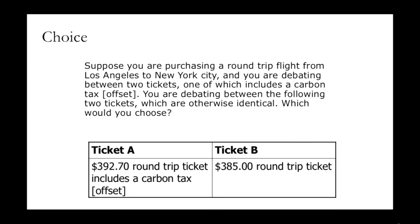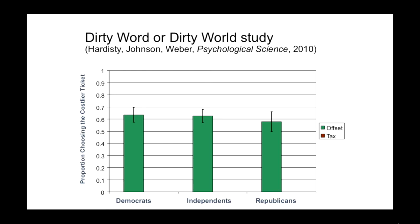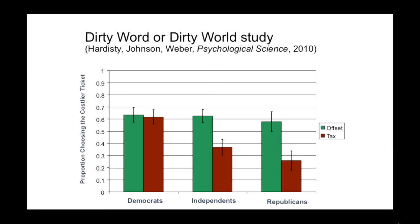This gets us to the attractive label part. We gave a representative sample of Americans a choice between two airline tickets: one just the ticket, and one that included a carbon user fee, with two pages of text explaining the pricing and what the money would do. The only difference between respondents was whether the fee was called a 'carbon tax' or a 'carbon offset.' When it's called a carbon offset, it makes no difference — Democrats, independents, and Republicans choose the inclusive option 62% of the time. But when it's called a carbon tax, it makes no difference for Democrats, while Republican uptake dropped to 27%.